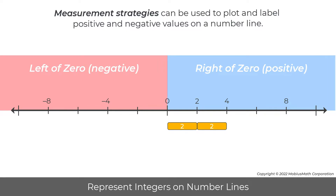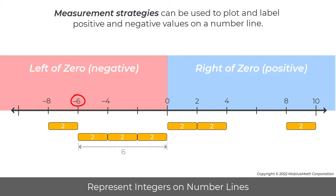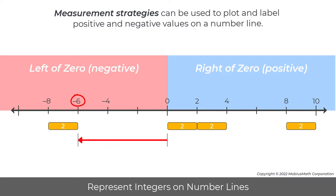For example, one two-bar to the right of eight is ten. On the other hand, one two-bar to the right of negative eight is negative six. This answer can be justified by noting that this point is a distance of six to the left of zero. In addition, this location can be justified by showing that the opposite, or mirror image, of negative six is six.